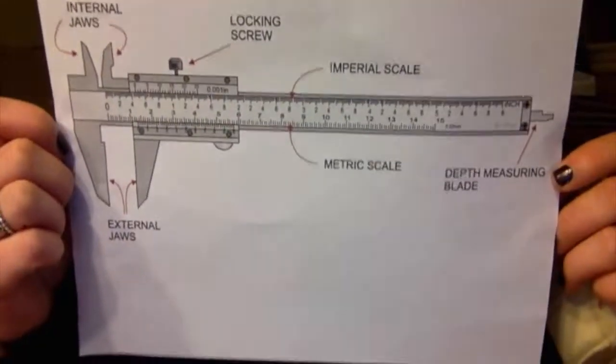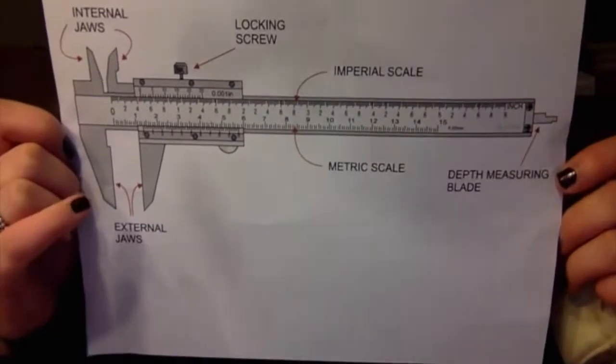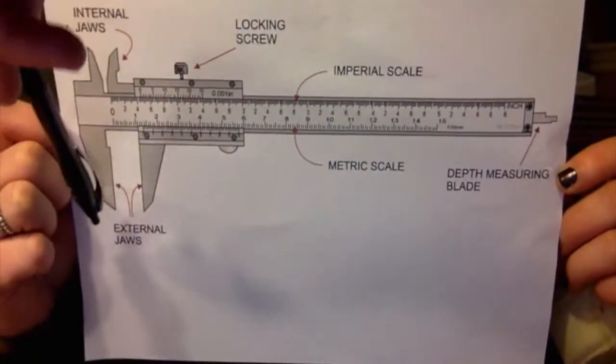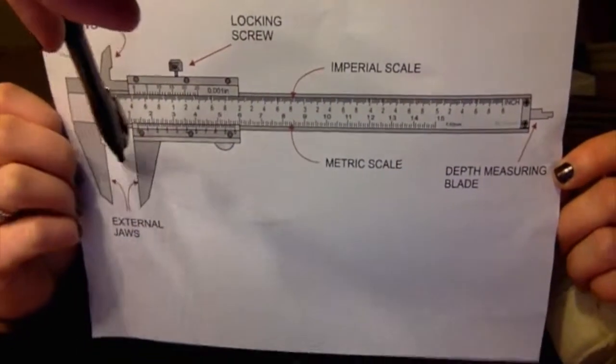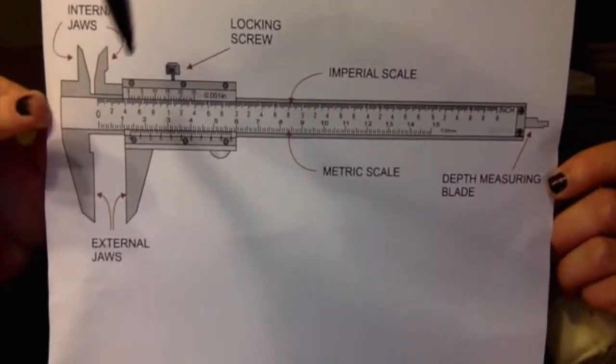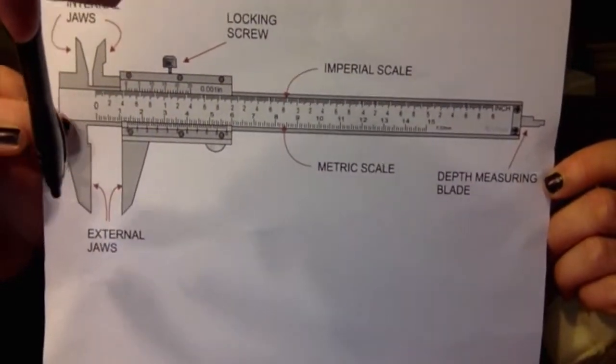There are many different parts on the caliper. These are the internal jaws and these are the external jaws, and this is where you measure the object. This is the locking screw, which holds the scale in place when you're measuring the object.